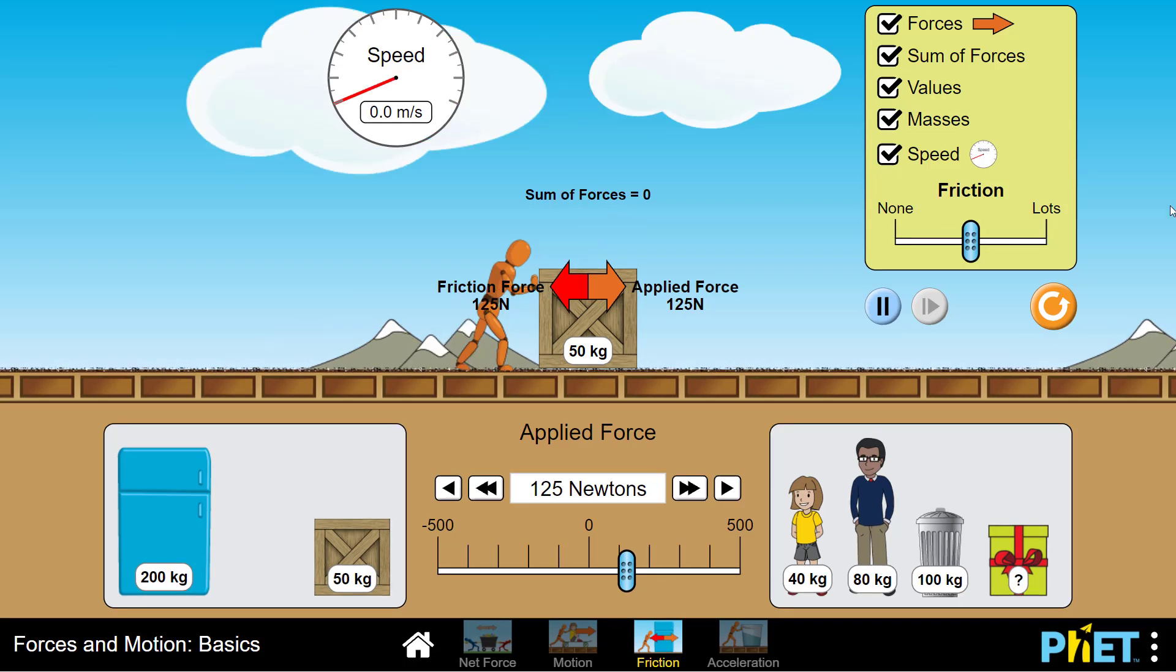I'm going to reset yet again and dial my force up to 125 Newtons. This is right at the break-even point. I'm applying a rightward force of 125 Newtons and friction, specifically static friction, is exerting an opposite and equal force of 125 Newtons to the left. That is the static friction force.